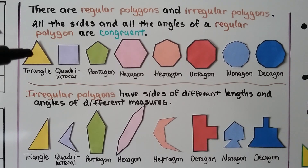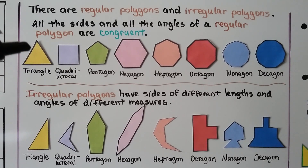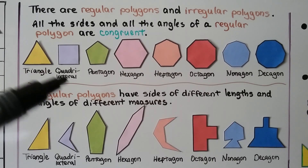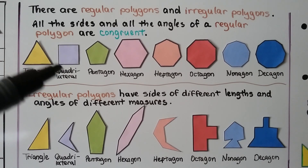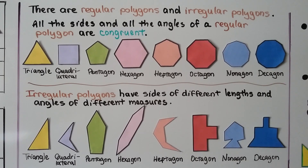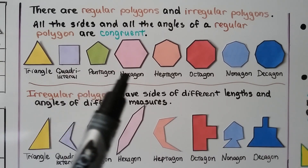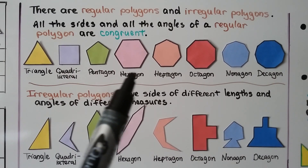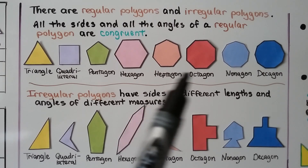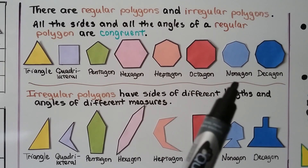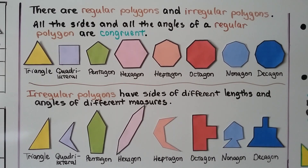All the sides and all the angles of a regular polygon are congruent. For this triangle, all three sides are the same length — they're congruent to each other. This quadrilateral is a square and all four sides are the same length — the sides and angles are congruent. Same with this pentagon, hexagon with six sides, heptagon with seven, octagon with eight, nonagon with nine, and decagon with ten.